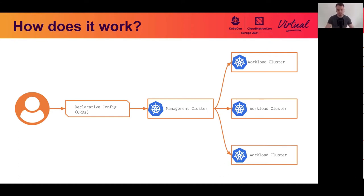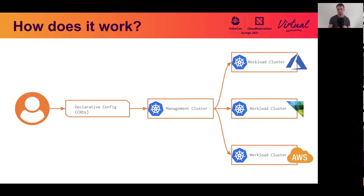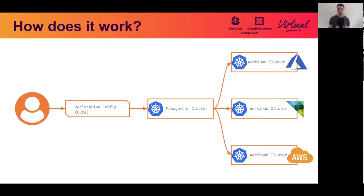Taking a deeper look, we have interchangeable components, meaning the management cluster can have multiple infrastructure providers which allow us to manage workload clusters on different infrastructure. For example, we could have one workload cluster on Azure, one on vSphere, and one on AWS — all possible through this declarative approach using controller managers inside the management cluster.